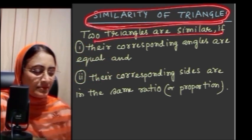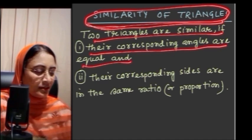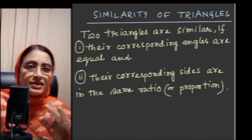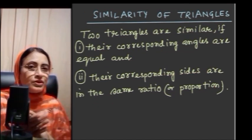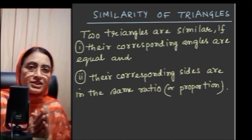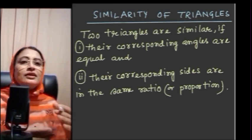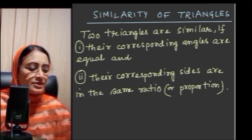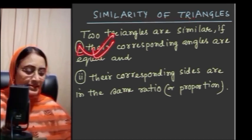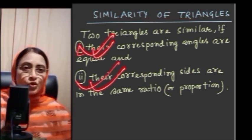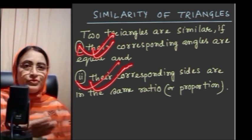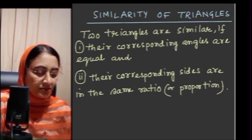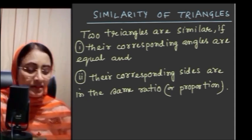Two triangles are similar if their corresponding angles are equal and their corresponding sides are in the same ratio, or proportional. The difference from polygons is that in case of polygons both conditions must be verified independently. In case of triangles, if any one of these two conditions is fulfilled, the second condition is automatically also fulfilled. So in case of triangles, any one of these two conditions can be used to define similar triangles.